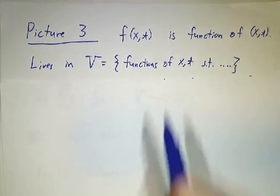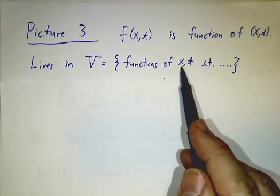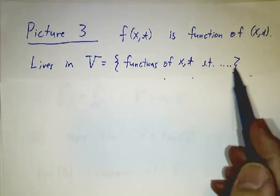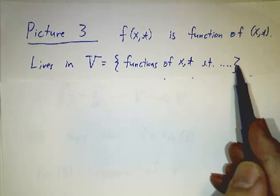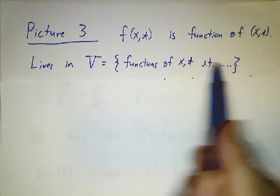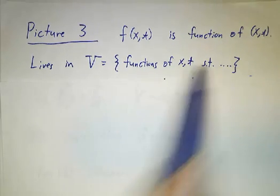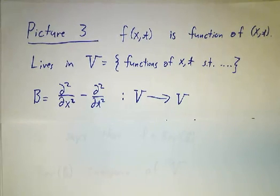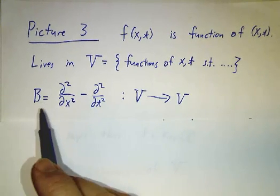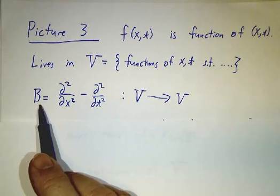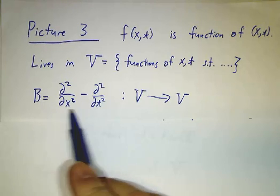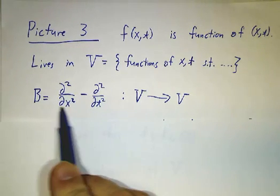It lives in a space of functions of x and t, and maybe it's functions of x and t that satisfy some extra conditions. Depending on the exact application, we'll use different vector spaces. And here, instead of looking at the function A that takes functions of x to functions of x, we're going to look at this operator, sometimes called the d'Alembertian.